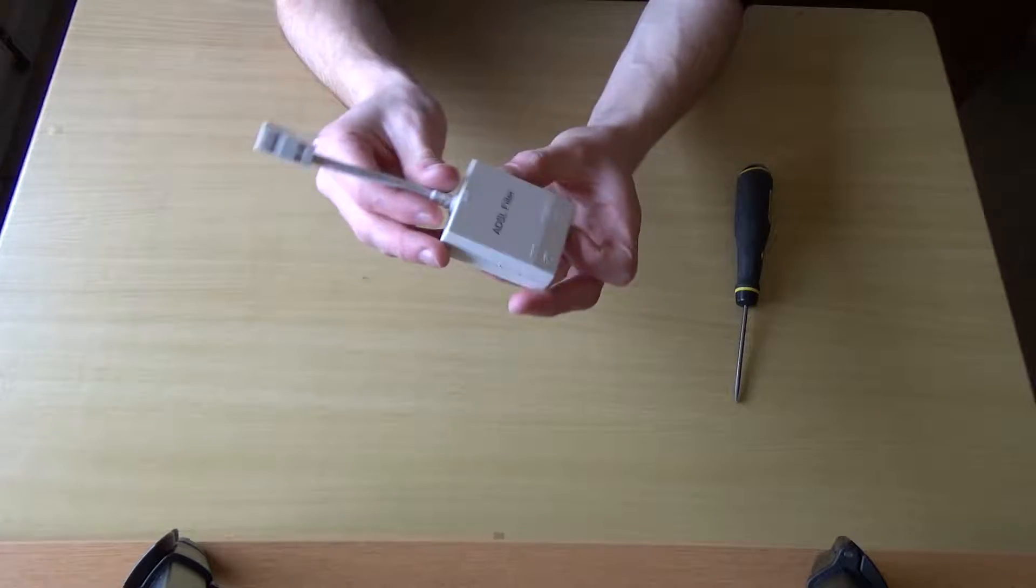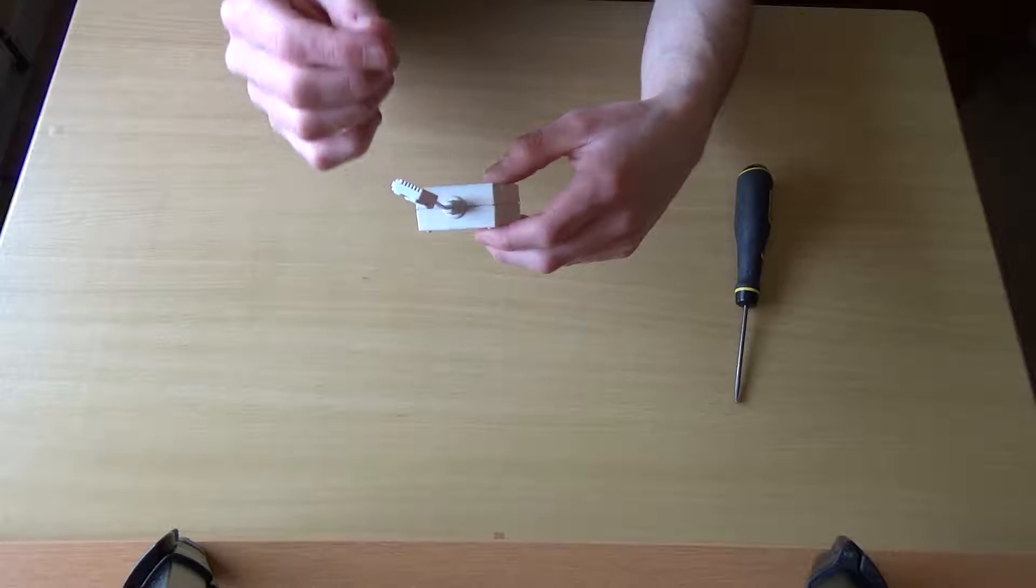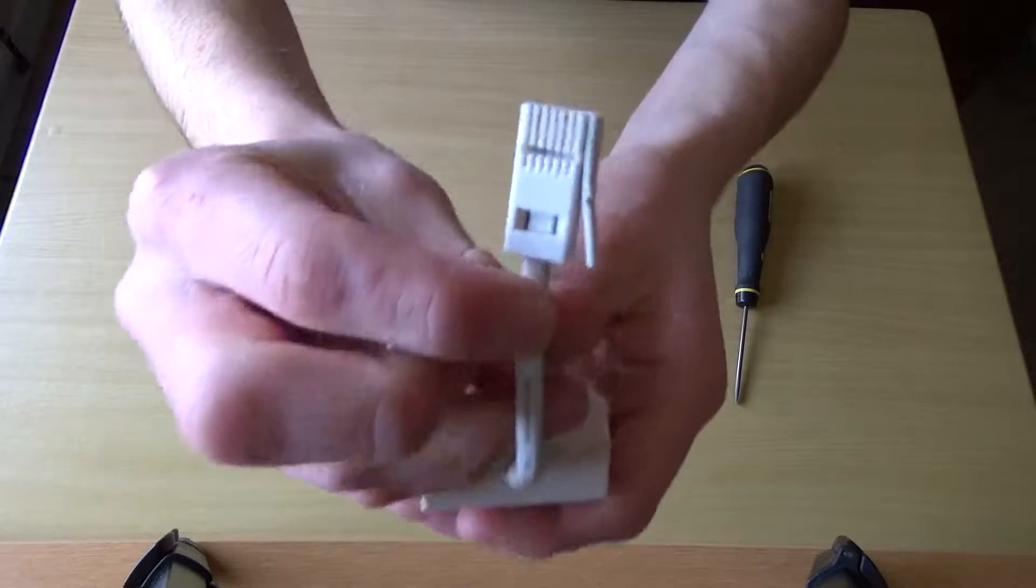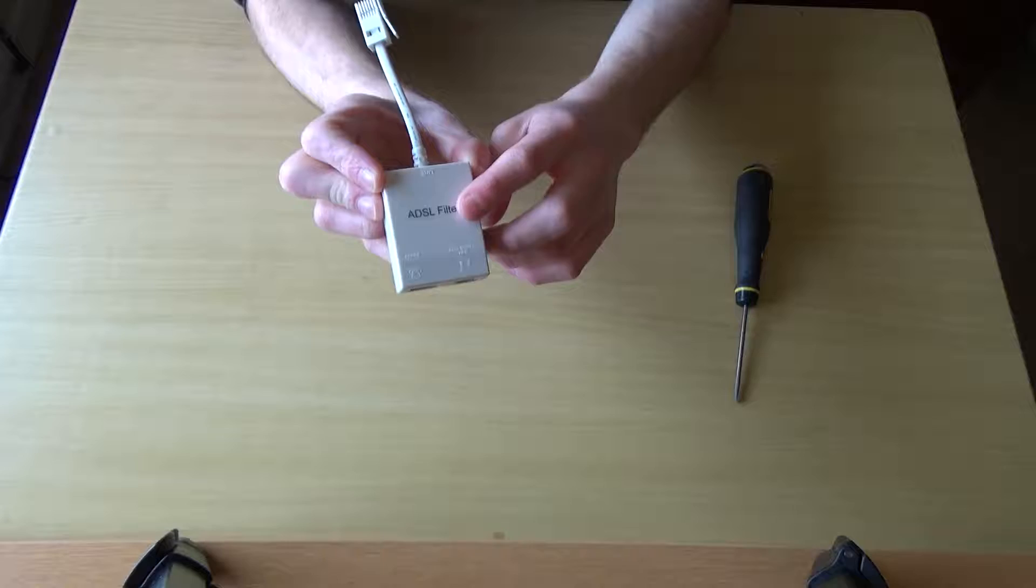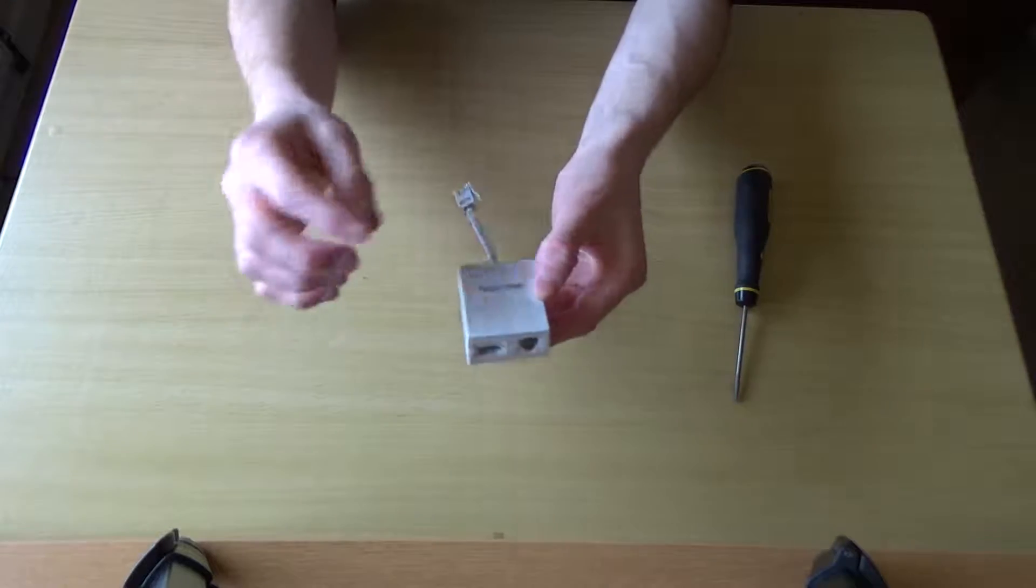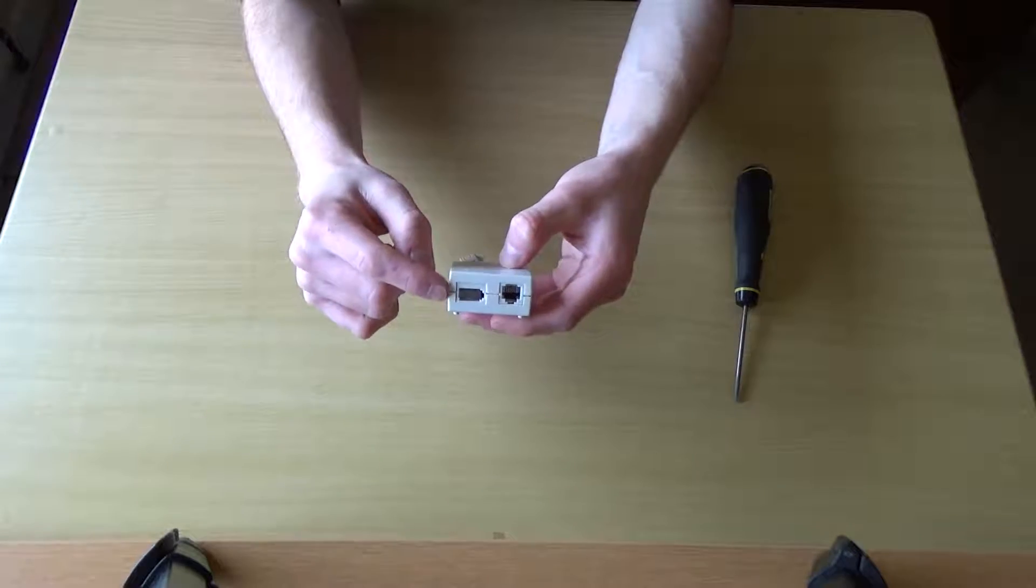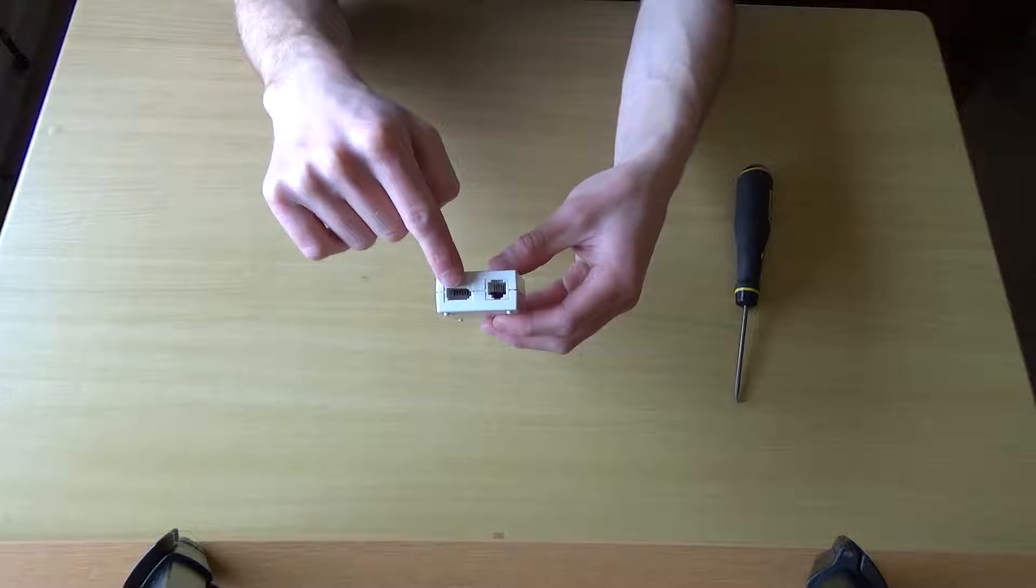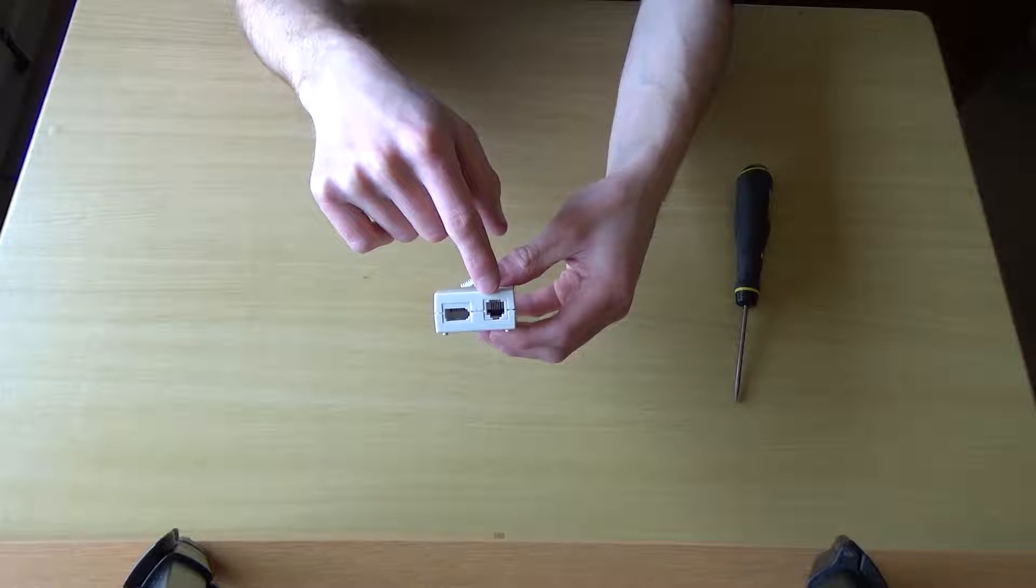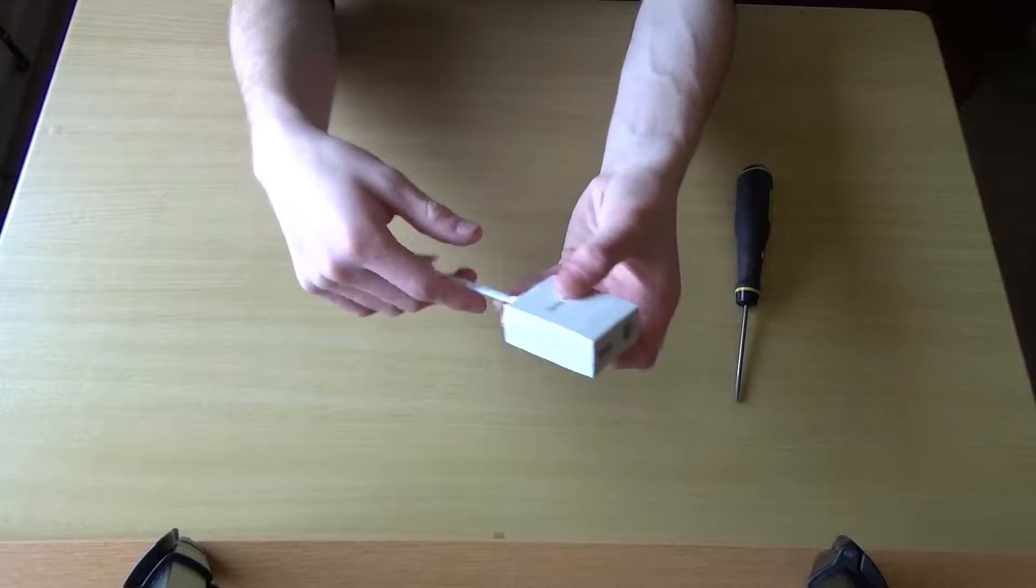I don't know what it's like in other countries, but in the UK the internet is provided through the phone line. So you plug that into the phone line and an ADSL filter takes the signal and splits it into both the phone line and the internet line. You get two outputs so you can plug your phone into one and your internet into the other.